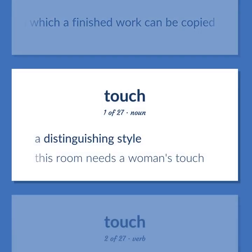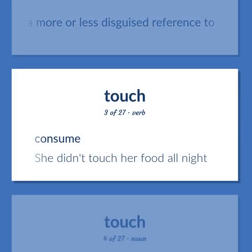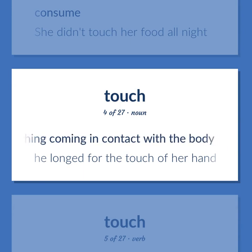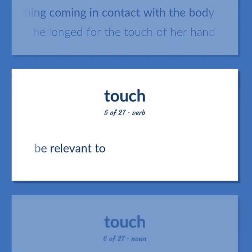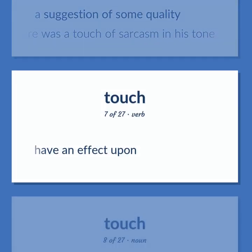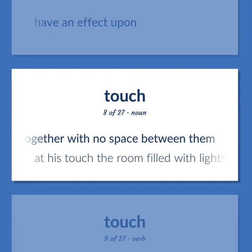Touch: A distinguishing style — this room needs a woman's touch. Make a more or less disguised reference to. Consume — she didn't touch her food all night. The event of something coming in contact with the body — he longed for the touch of her hand. Be relevant to. A suggestion of some quality — there was a touch of sarcasm in his tone. Have an effect upon. The act of putting two things together with no space between them — at his touch the room filled with lights.